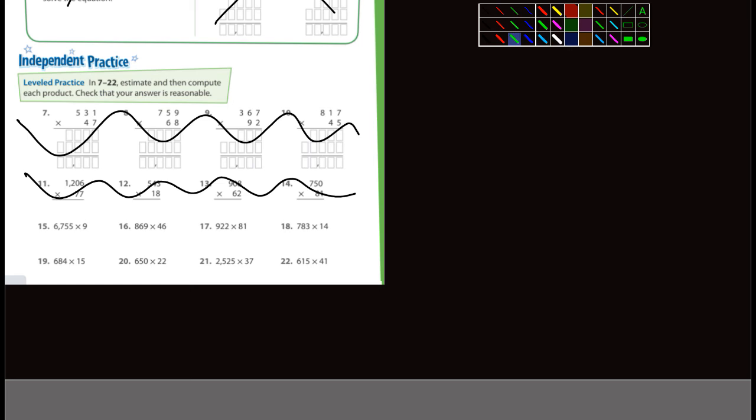Number 18 is 783 being multiplied by 14. 4 times 3 is 12, put down the 2, carry the 1. 4 times 8 is 32 plus 1 is 33, put down the 3, carry the 3. 4 times 7 is 28 plus 3 is 31. Put down a placeholder zero. Remember, each time you drop down a row you're going to move in one.